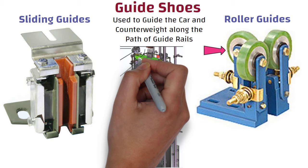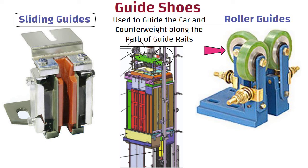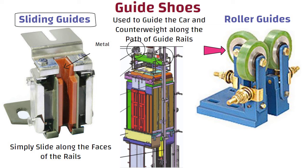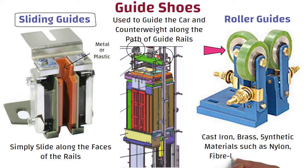Sliding guides are guide shoes which simply slide along the faces of the rails. The sliding insert or jib may be metal, requiring guide rails to be lubricated, or may be a plastic material which is self-lubricating. Guide shoes shall be made of cast iron, brass, or synthetic materials such as nylon, fiber-based hilum, etc.